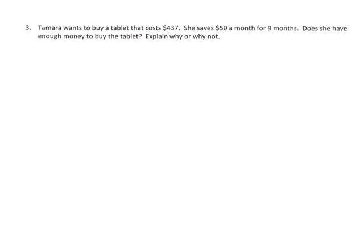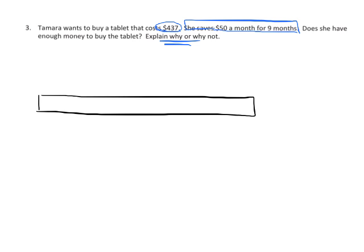In this problem, Tamara wants to buy a tablet that costs $437 — that's her goal. She saves $50 a month for 9 months. Does she have enough money? I'm going to draw a tape diagram for those 9 months, making 9 identical sections. I don't know how identical that is, but I was trying to make identical months.